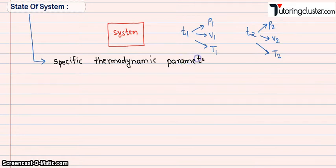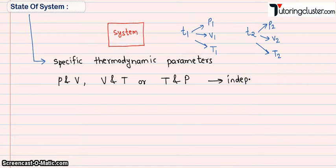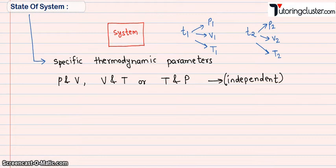These parameters tell you what is the state of a system. They can appear in pairs, for example pressure and volume, or volume and temperature, or temperature and pressure. These are independent parameters. So in simple language, at t1 second, what is the temperature of the system — it is going to tell you what is the state at that particular time.